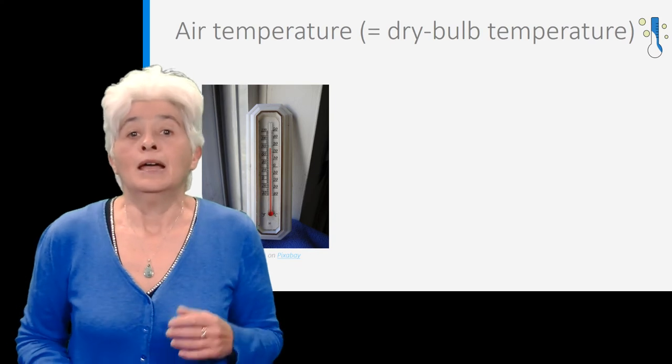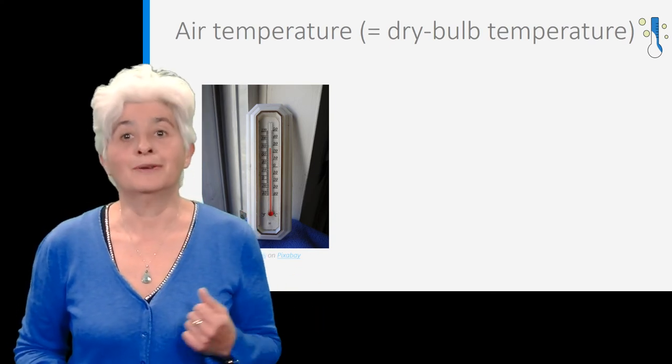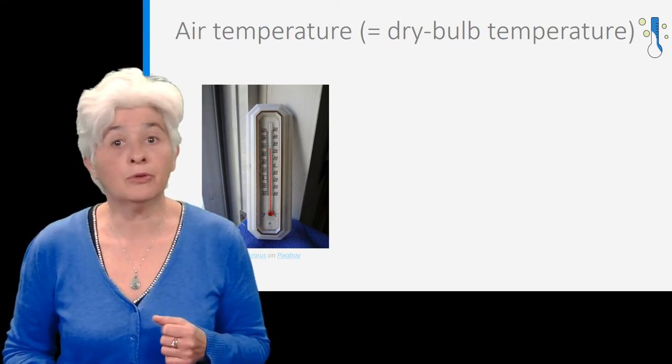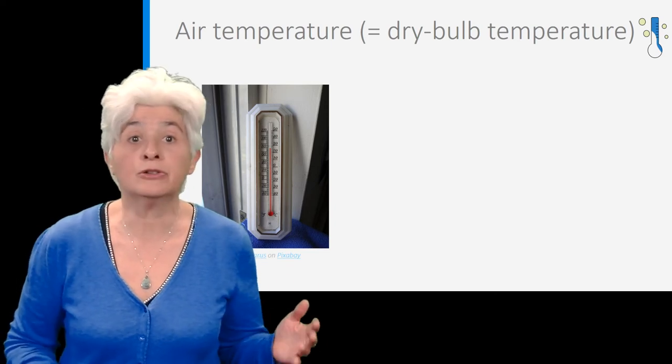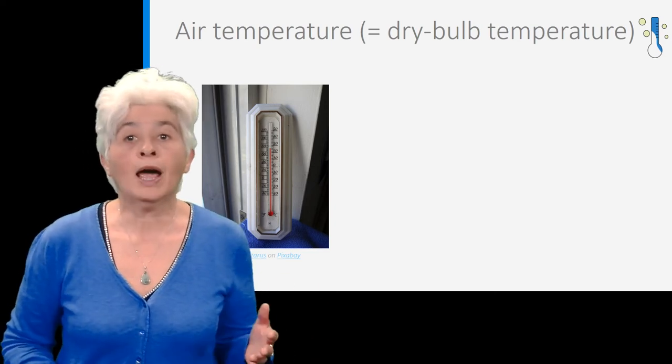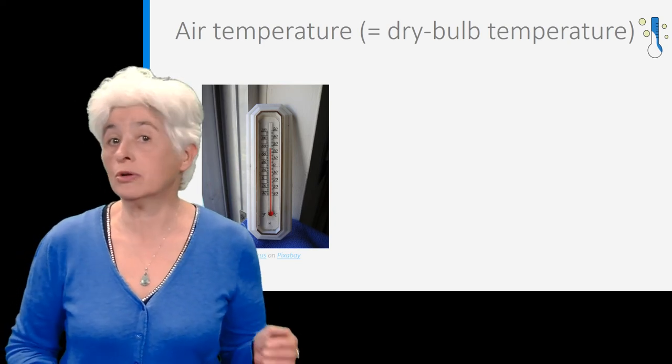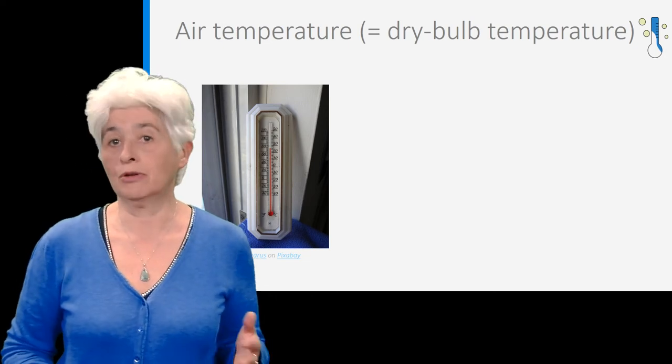Why is this air temperature called the dry bulb temperature? This is because there is generally some water vapor contained in the air and this vapor can condensate under certain conditions. The dry bulb temperature is the temperature of the air when there is no condensation of water vapor on it. We will come back to that in another lecture. This is just air as we know it in our daily lives when there is no fog.